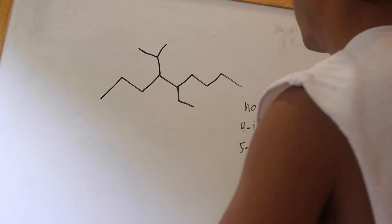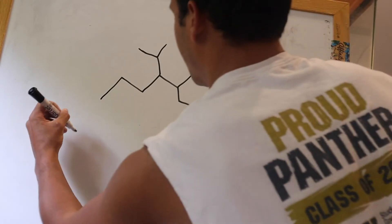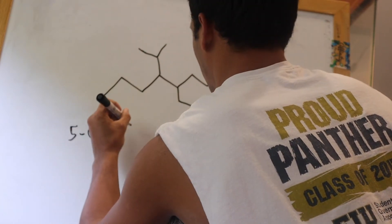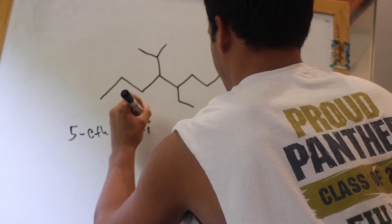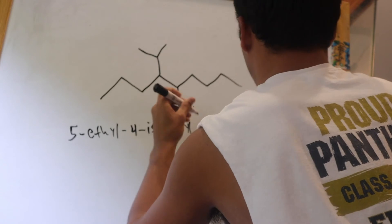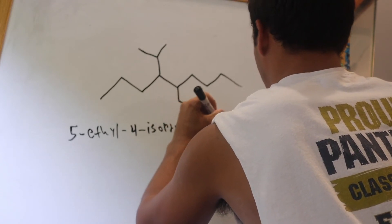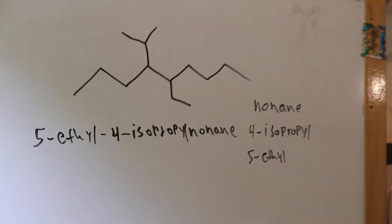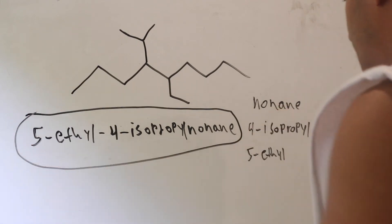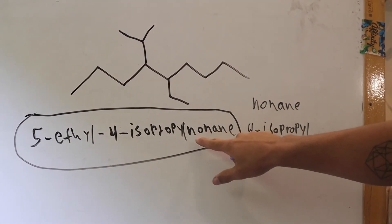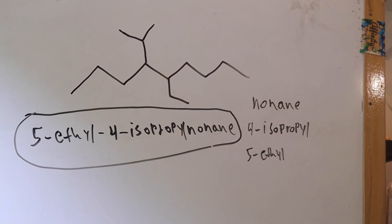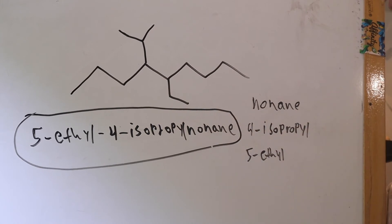And so the name now goes, in alphabetical order, E comes before I, 5-ethyl-4-isopropylnonane. And so, that last part, nonane, goes at the end of isopropyl. And again, that's just because that's how it is in alphabetical order.